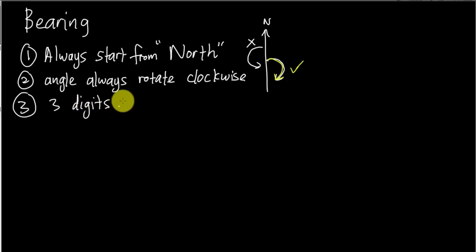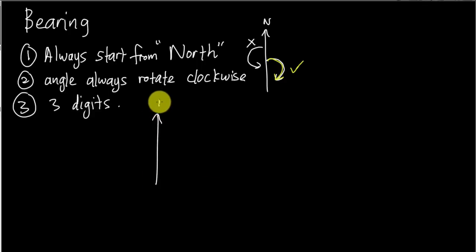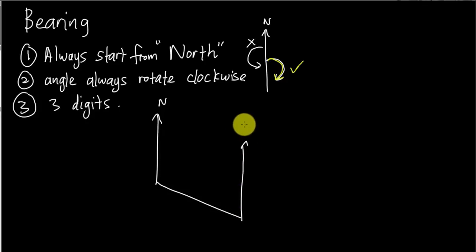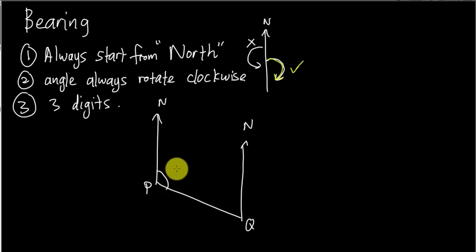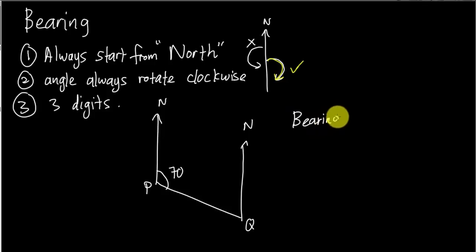Let's look at a basic example. Say this is north here, and another north here. This is point P and this is point Q. The given angle is 70 degrees. I'm going to ask you to find the bearing of P from Q.